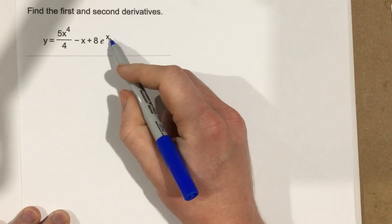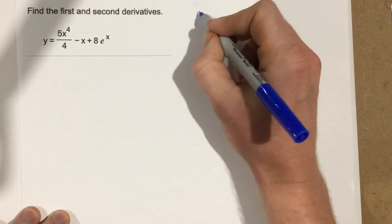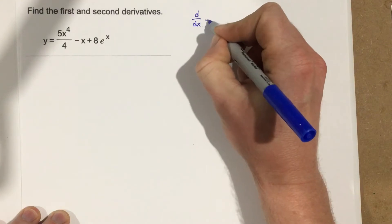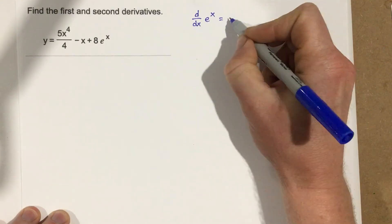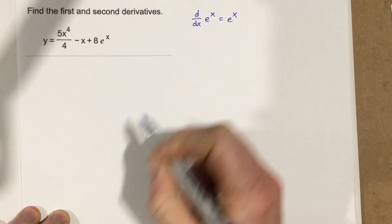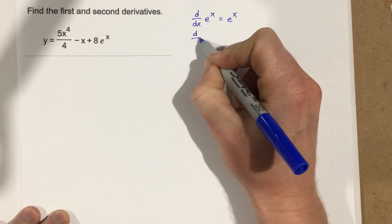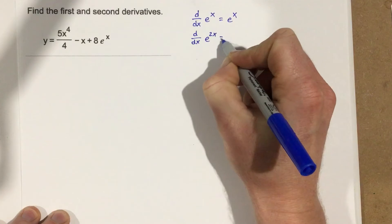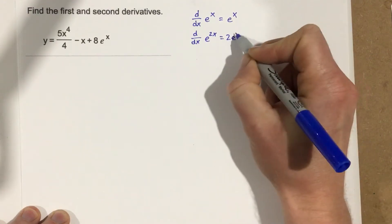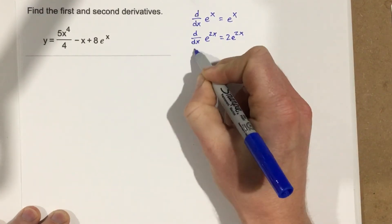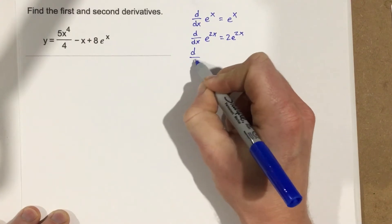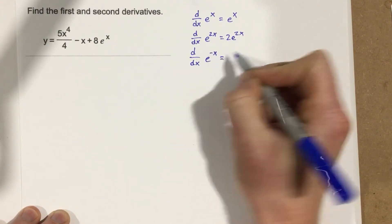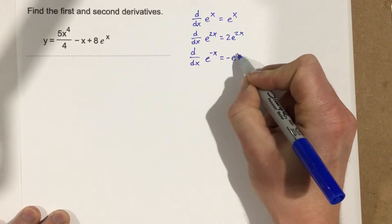Before we start, I want to talk about what the derivative of e to the x is. So the derivative of e to the x is just e to the x. And the derivative of e to the 2x is 2e to the 2x. And the derivative of e to the negative x is negative e to the negative x.